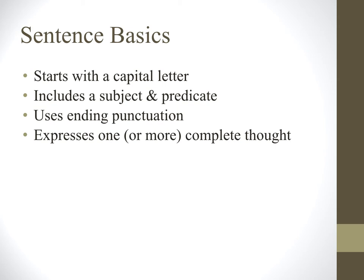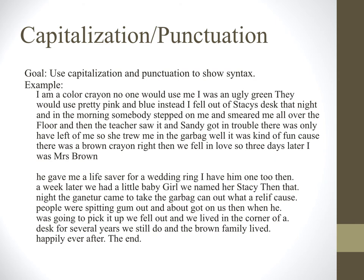Here's an example of a student who hasn't quite gotten a handle on sentence basics yet. In her first paragraph, she wrote: I am a color crayon, no one would use me, I was an ugly green. They would use pretty pink and blue instead. I fell out of Stacy's desk that night, and in the morning, someone stepped on me and smeared me all over the floor, and then the teacher saw it and Sandy got in trouble. There was only half of me, so she threw me in the garbage. Well, it was kind of fun, because there was a brown crayon right then, and we fell in love.